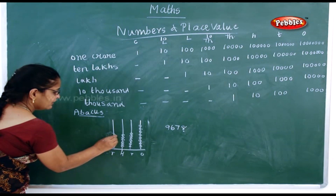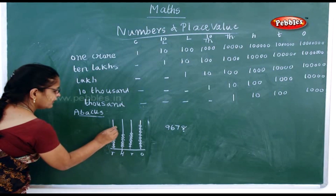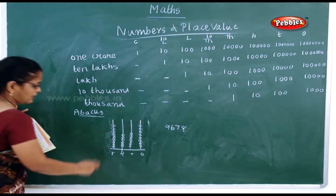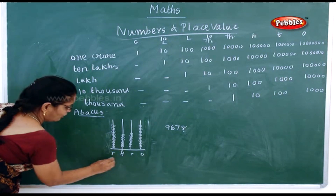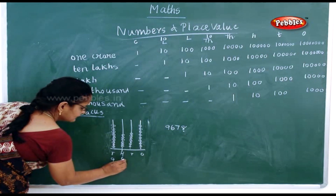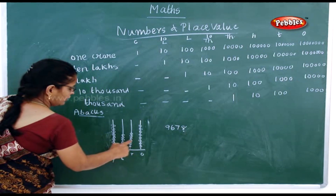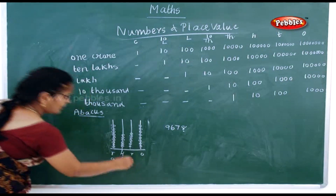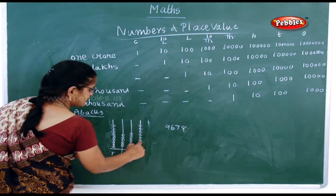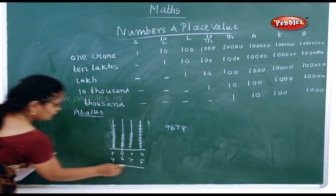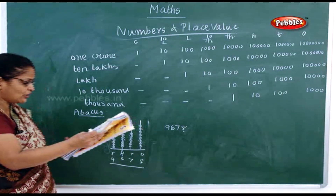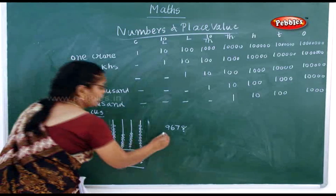Next is thousands — nine thousands — so you'll have nine rings: one through nine. So with this abacus you can automatically say: nine thousands, six hundreds, seventy, and eight ones — that is nine thousand six hundred and seventy-eight.